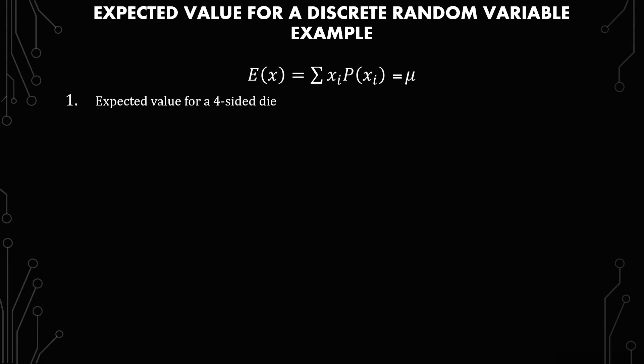The first example is the expected value for a four-sided die. So what do you do with a four-sided die that's equally likely? Basically, just take the values and multiply it by one-fourth. So this is what it looks like.